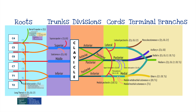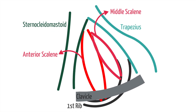These trunks pass parallel and deep to the posterior triangle. The posterior triangle is created by the sternocleidomastoid anteriorly, trapezius posteriorly, and the clavicle inferiorly. The floor of the posterior triangle is created by the anterior scalene, middle scalene, levator scapulae, and splenius capitis.